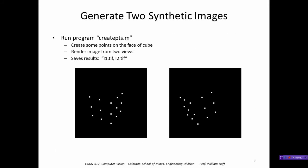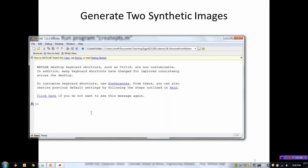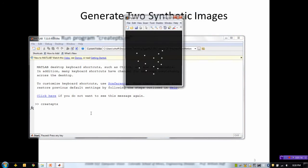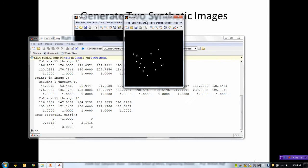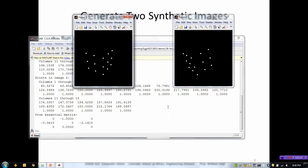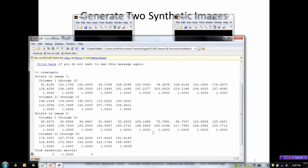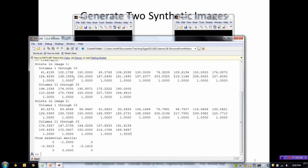We're going to see how to generate or calculate E from two views. First, I'm going to create a synthetic image to use as input for the rest of the lecture. I'm going to run this program called create points, which creates two sets of points—points on the face of a cube.